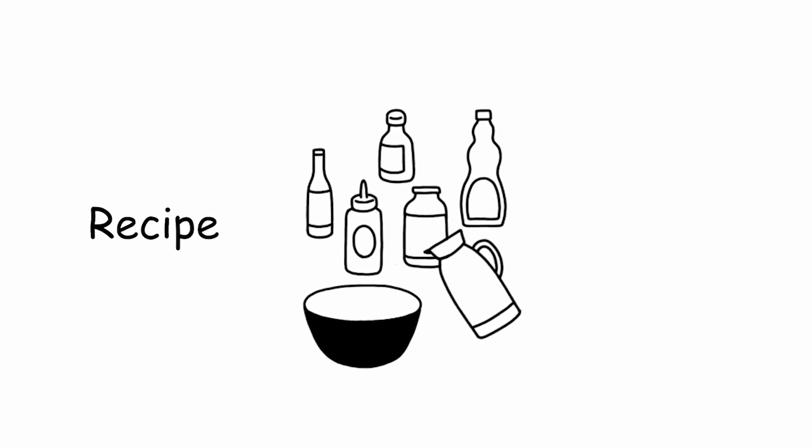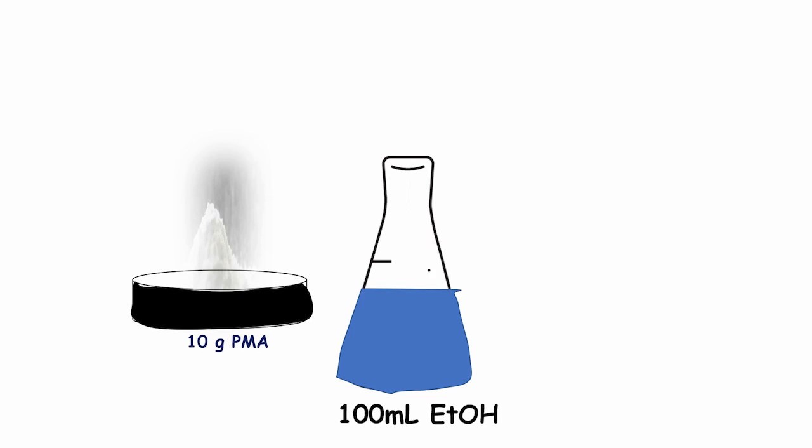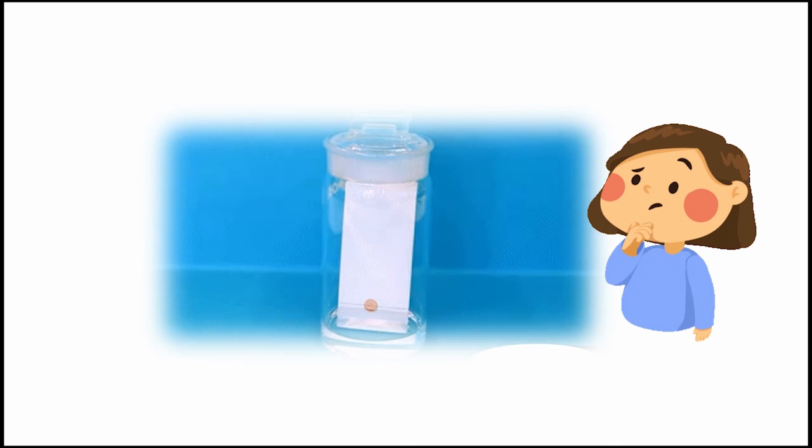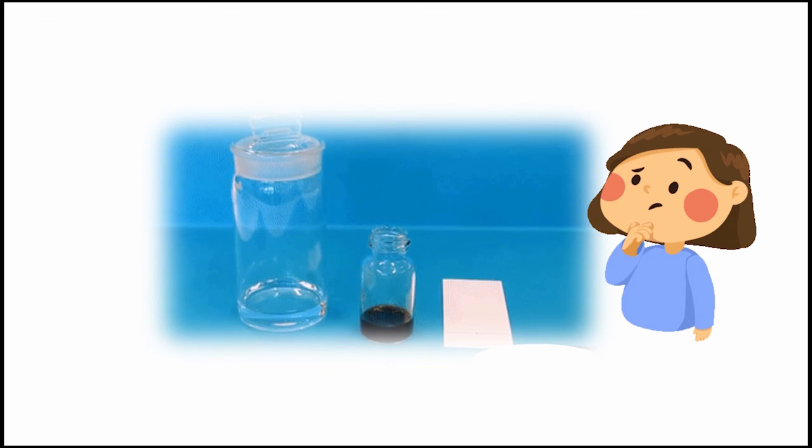Recipe for making PMA stain. Dissolve 10 gram of phosphomolybdic acid in 100 ml of absolute ethanol. So, if you are in doubt which staining agent you should use then best thing is to stain it with the PMA.